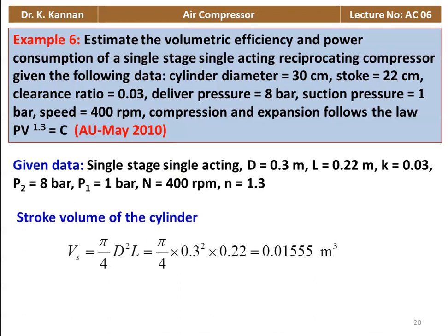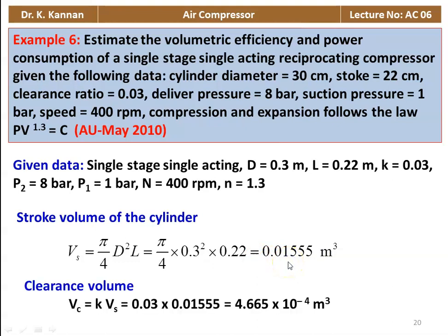First we calculate the stroke volume: Vs equal to pi by 4 D squared into L, so pi by 4 into 0.3 squared into 0.22 equal to 0.01555 meter cube. And we calculate the clearance volume: Vc equal to K into Vs, so 0.03 into 0.01555, which equals 4.665 times 10 to the power minus 4 meter cube.